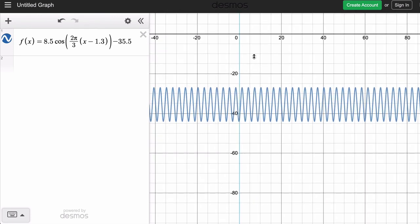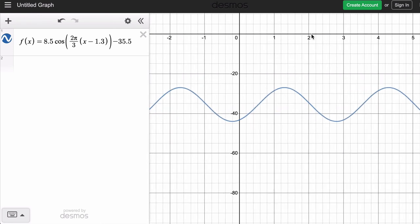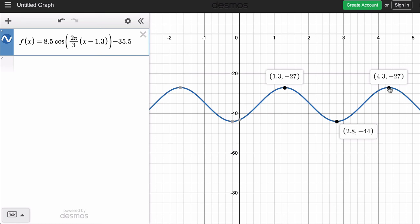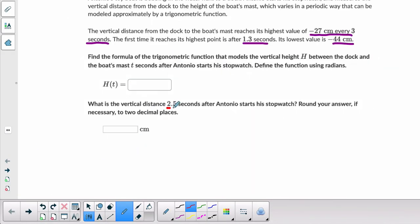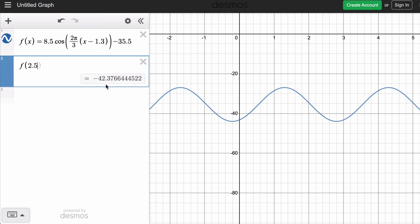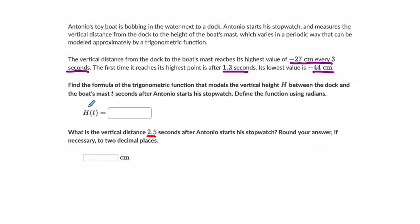Now I'm going to hit shift and drag this out so I can see. I want to see at 1.3 seconds what's happening. And if I click it, I can see there's 1.3 and negative 27. Here's 2.8, negative 44, and 4.3 at negative 27. Now they want to know what happens at 2.5 seconds. So I'm just going to type in f of 2.5. And I'm at negative 42.38. That's two decimal places. So negative 42.38. And again, the function is 8.5 cosine of 2π over 3 times t minus 1.3 and then minus 35.5. I hope that helped.